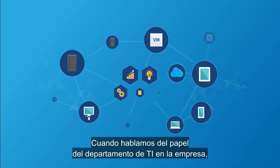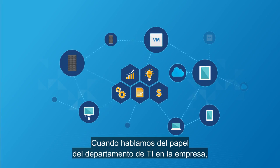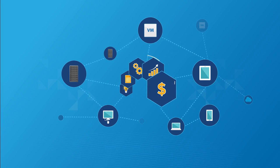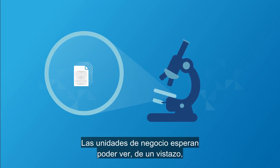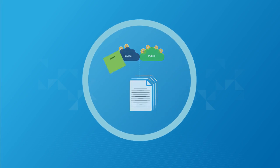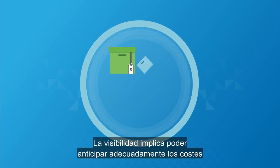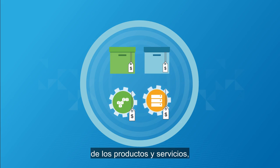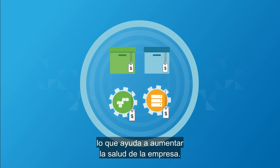When it comes to the role of IT in business, it's all about accountability. Line of Business expects to be able to, at a glance, see the costs of working in the cloud, both private and public. Visibility means the ability to properly forecast costs for products and services, thus helping them run a healthier business.